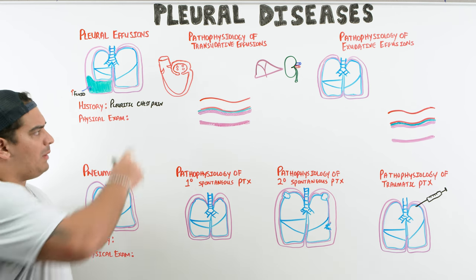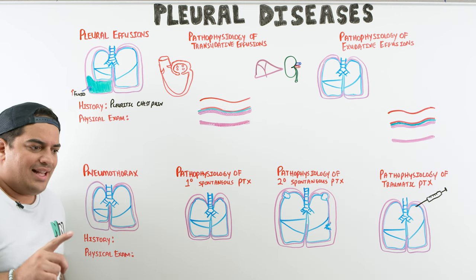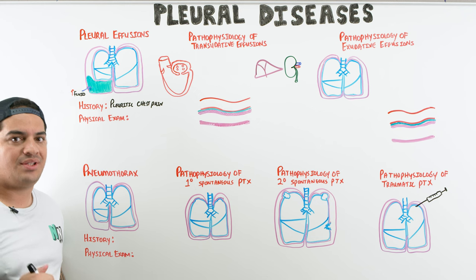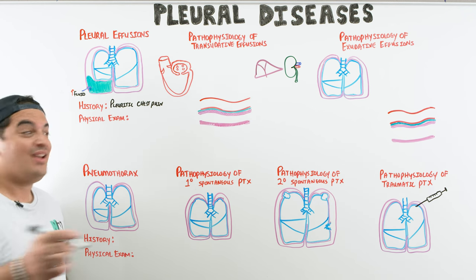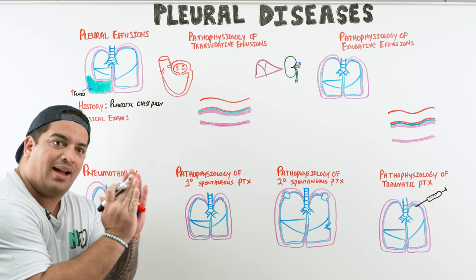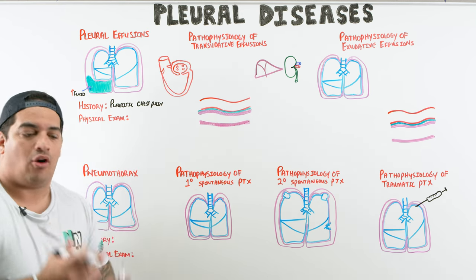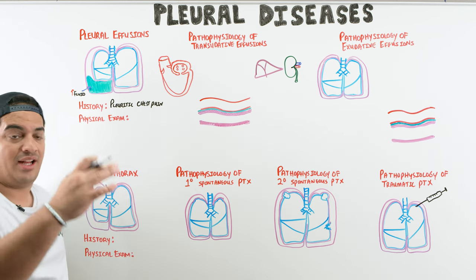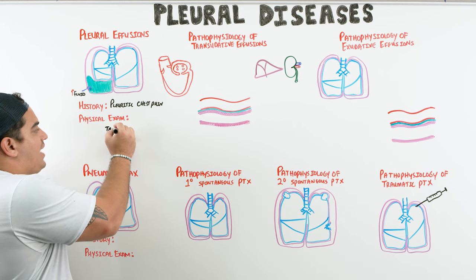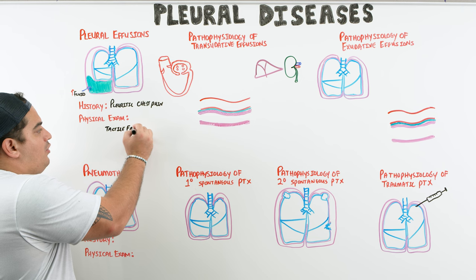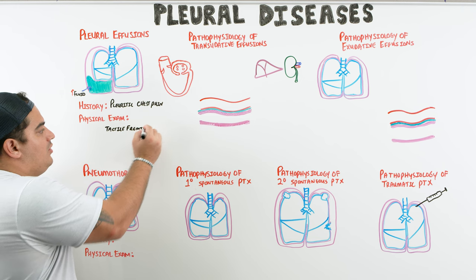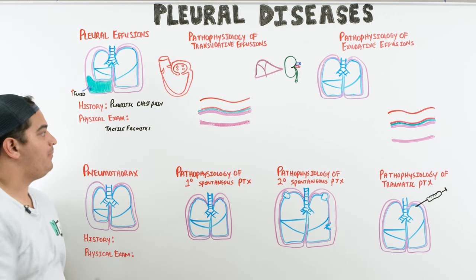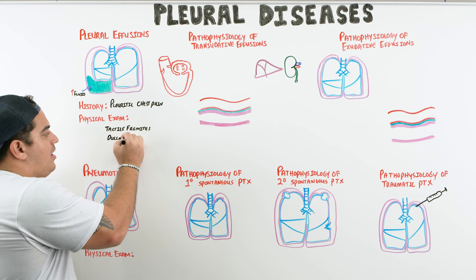On physical exam, pleural effusions affect tactile fremitus. When you place your hands over the patient's back and ask them to say '99,' your ability to feel the vibration on your hypothenar eminences will be reduced because the fluid alters transmission. Watch out for a reduction in tactile fremitus. Percussion over the effusion will also be dull due to the fluid.